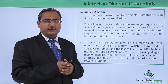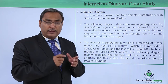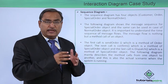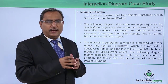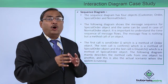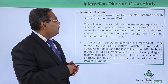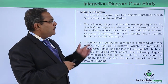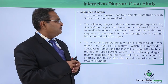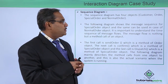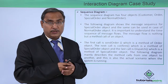Let us consider the sequence diagram first. We know that before considering any kind of interaction diagram, we should consider what objects we are going to have. The sequence diagram has four objects: the first one is the customer, then order, special order, and normal order.